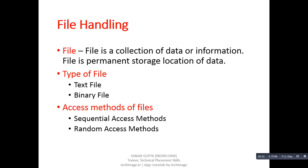The second type is binary file, which stores data in binary format — that is, a combination of 0 and 1. Next are the access methods of files. There are two access methods available: first is sequential access method, in which we can access data step by step. In the case of random access method, we can pick desired data randomly.